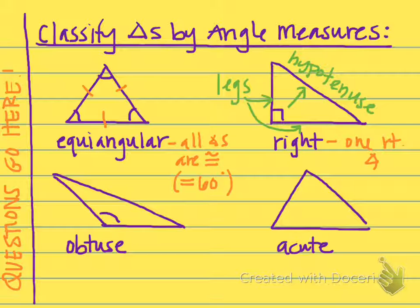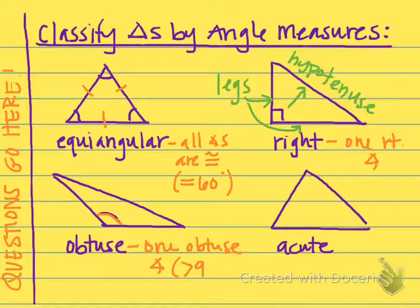We also have a third classification, and that is an obtuse triangle. There can only be one obtuse angle. If you remember, obtuse means greater than 90 degrees — not equal to, not less than, but greater. Then we have an acute triangle, and that means all the angles are acute — they're all less than 90 degrees.